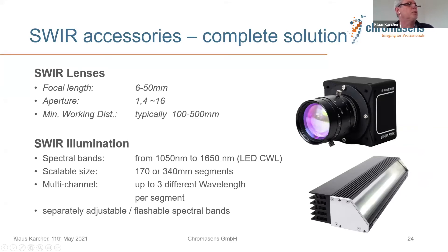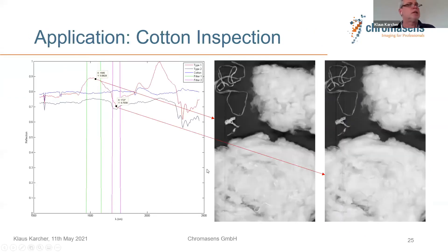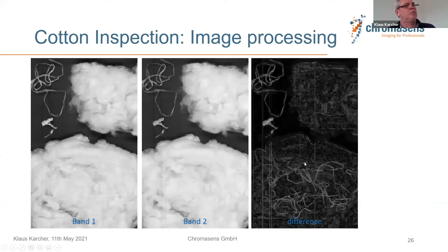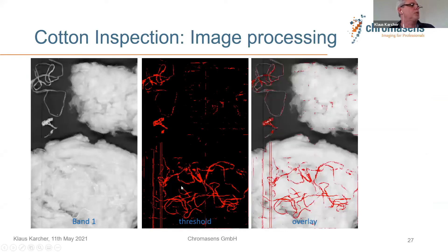One application example: a hyperspectral scan is always a good starting point to select the right wavelengths. When you scan two specific bands with two different LEDs and subtract them, you initially see little difference, but after image processing — thresholding and overlaying — you can clearly detect foreign fibers in cotton: plastic fibers in the cotton which are impurities. These are only fairly visible in the SWIR wavelength range.